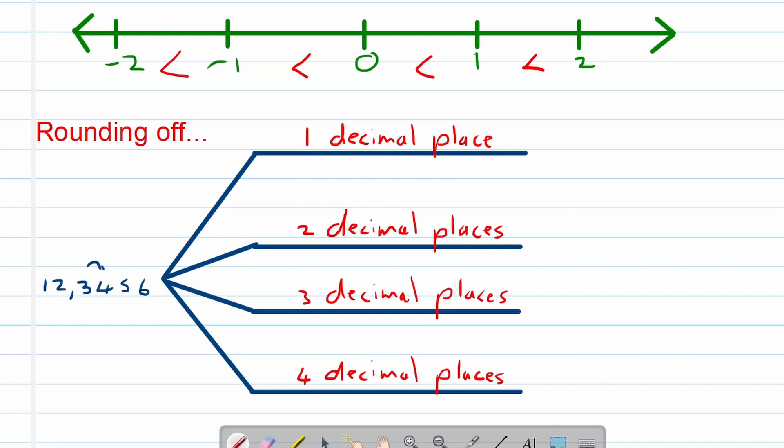And again, we're looking at the number to its right to see if that one influences it and how it influences it. So the first one, it is 12.3 because the four is not five or bigger. Therefore it just remains 12.3.